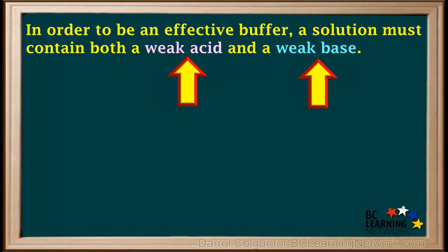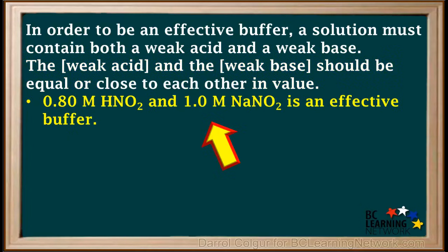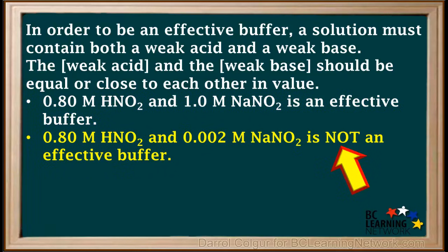One more requirement: as well as containing both a weak acid and a weak base, the concentrations of the weak acid and weak base should be equal or close to each other in value. For example, a solution in which the concentration of HNO2 is 0.8 molar and the concentration of NaNO2 is 1 molar is an effective buffer because these values are close. But a solution in which the concentration of HNO2 is 0.8 molar and NO2- is only 0.002 molar is not effective — the values 0.8 molar and 0.002 molar are too different.